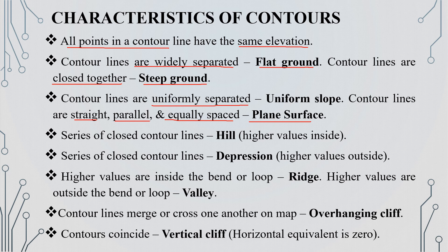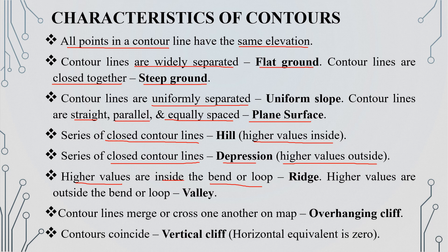For a hill, contour lines are closed with higher values inside. For a depression, contour lines are closed with lower values inside. For a ridge, contour lines are bent and loop inward toward higher values. For a valley, contour lines are bent and loop outward toward lower values.